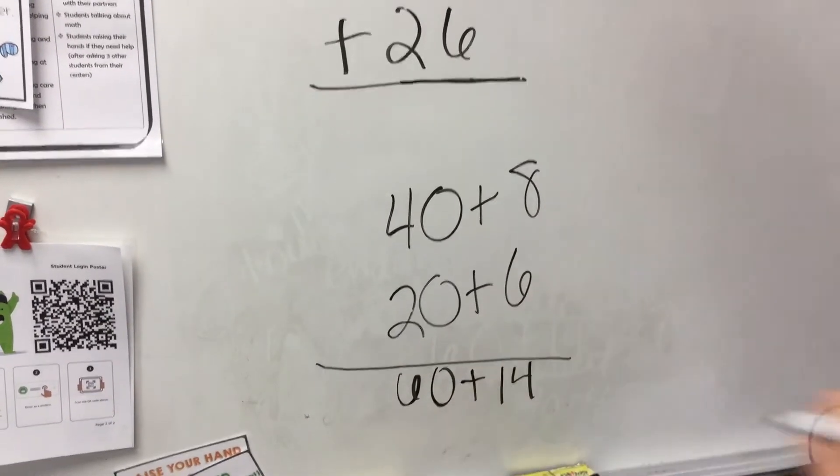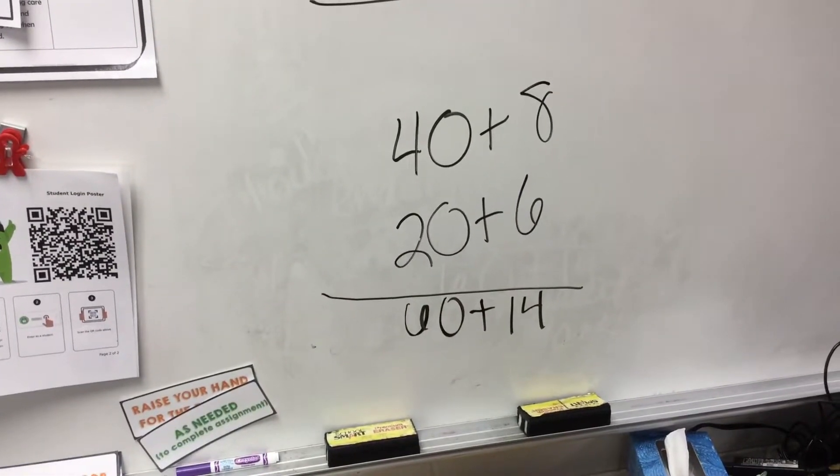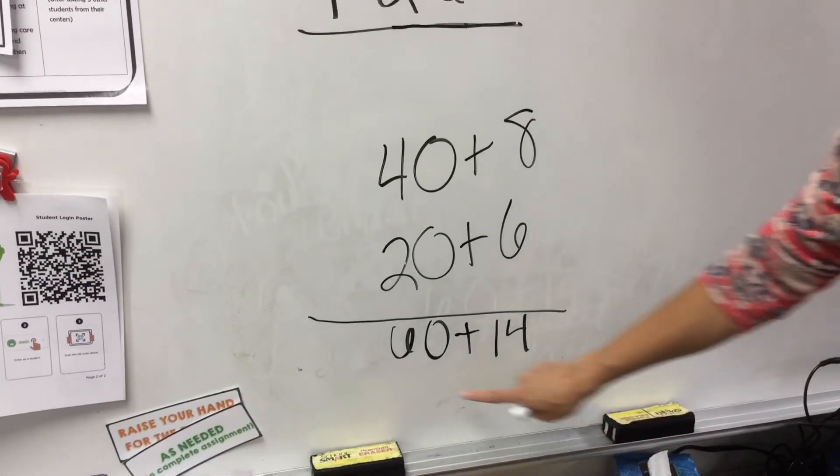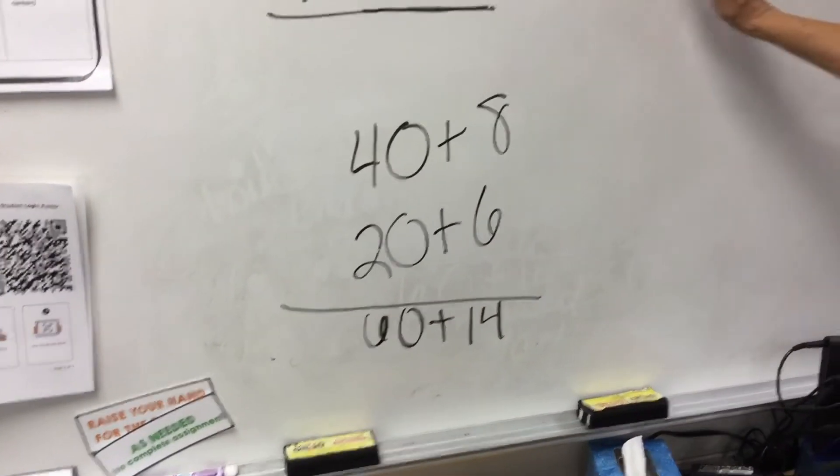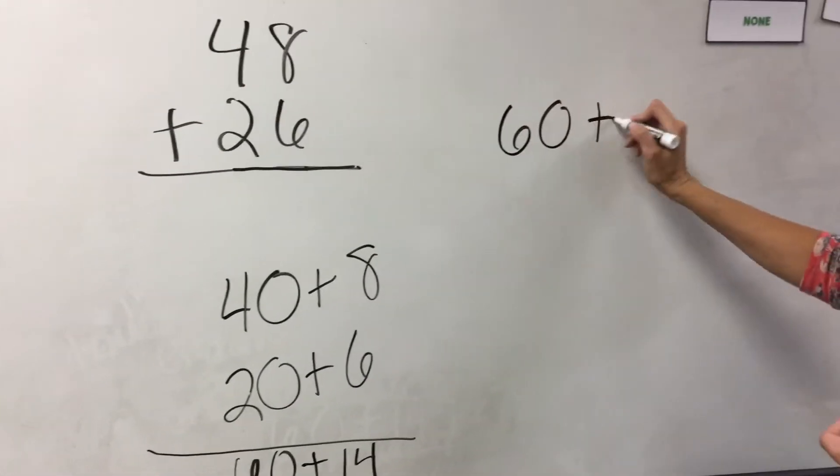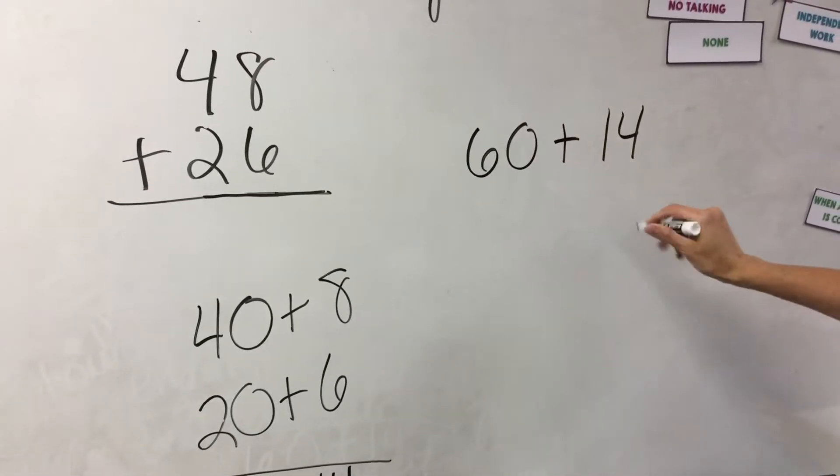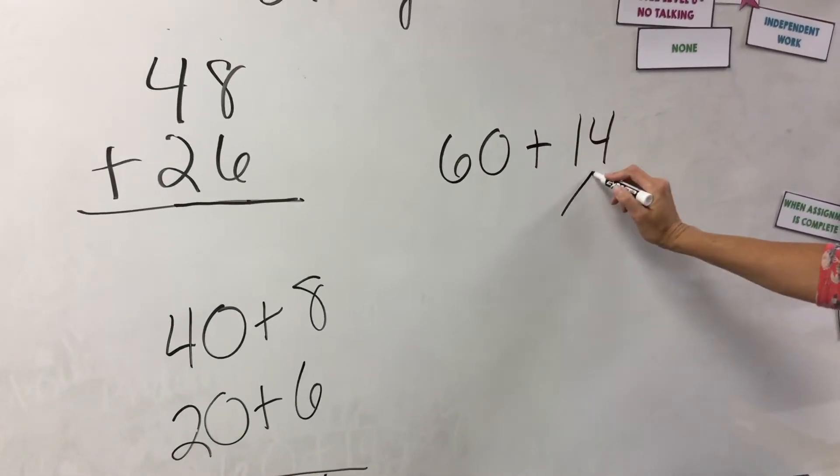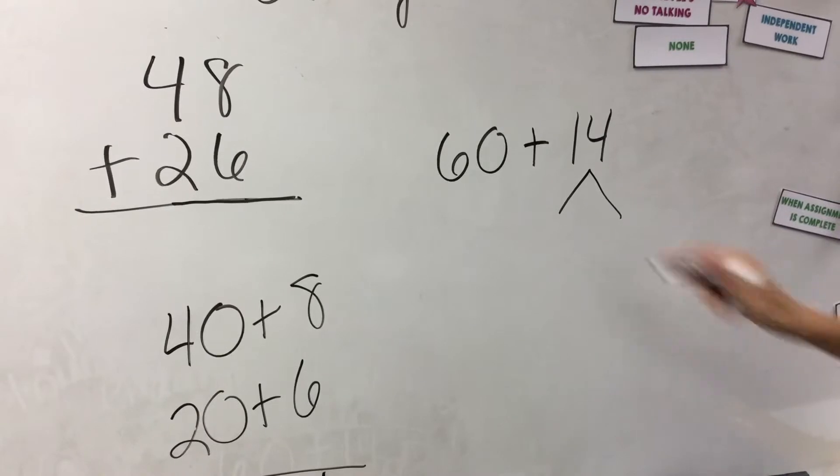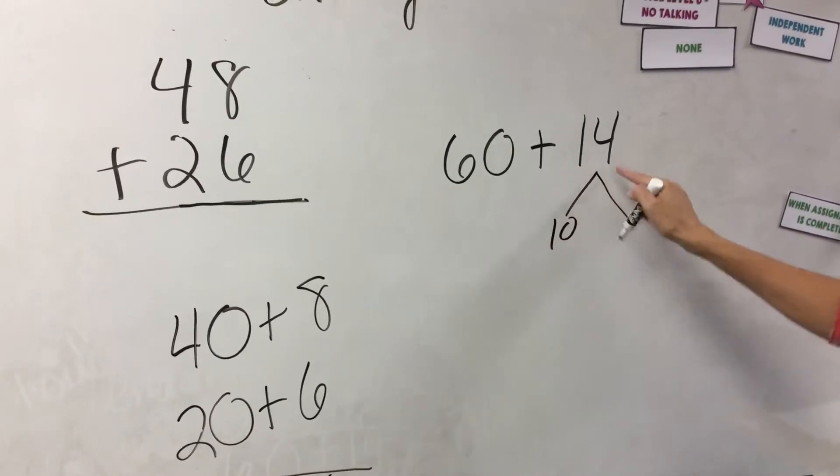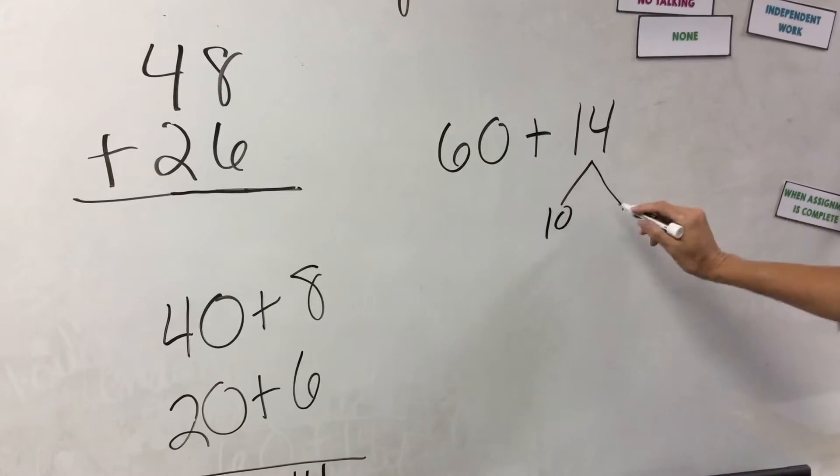And then I have a new addition problem. I have 60 plus 14. But now I might want to break it down even a little bit further. So I'm going to come over here and write 60 plus 14. And so I'm going to break apart this 14 because there's a 10 in that 14. I'm doing expanded form basically with the 14,